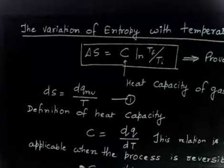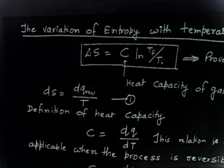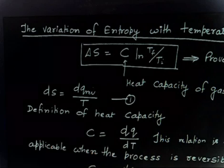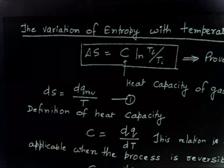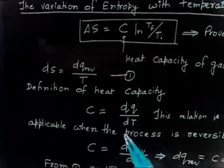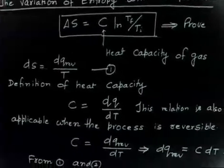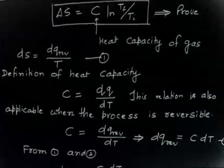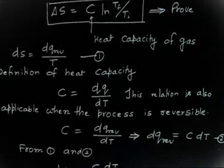To find dQ, we use the definition of heat capacity: if I give an object dQ amount of heat and the temperature rises by dT, then heat capacity C equals dQ divided by dT — the heat required per unit change in temperature. This relation is also applicable when the process is reversible, so C = dQ_reversible / dT, which gives dQ_reversible = C dT.